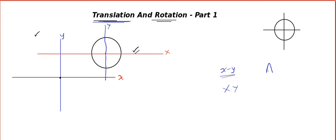When I talk about axes, I mean both x-axis and y-axis together. Translation means transforming the original system into a parallel system — that is, the new x-axis will be parallel to the old x-axis and the new y-axis will be parallel to the old y-axis.